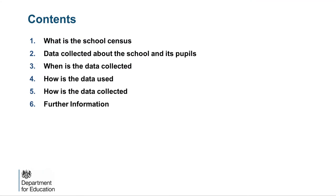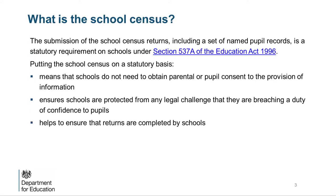This slide provides the topic list I'll be covering. Every term, the school is required by law to send some of the data to the department via the school census. The census is the department's primary source of administrative data about pupils attending schools in England. The data collected is vital in supporting a number of the department's key objectives and is widely used for the purpose of improving and promoting the education or wellbeing of children in England. It helps us to make sure we are allocating funds where they are needed and that no groups of children are missing out on the education they deserve.